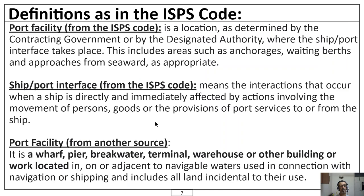Definitions as in the ISPS Code for Port Facility: the port facility is a location as determined by the contracting government or by the designated authority where the ship-port interface takes place. This includes areas such as anchorages, waiting berths and approaches from seaward as appropriate, as I showed you in the very first picture.